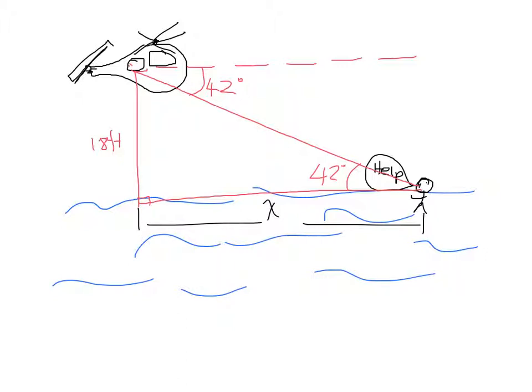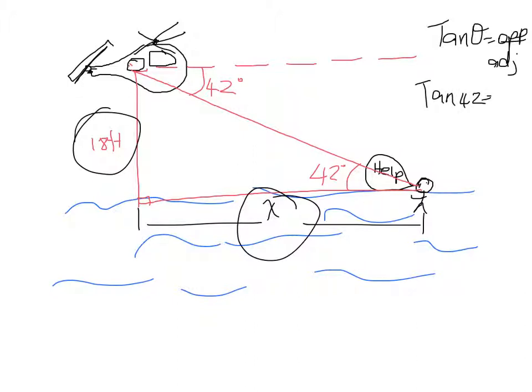So what do we do at this point? Well, we have here our opposite. That is opposite the 42 degrees, and we're looking for something that is adjacent to the 42 degrees. So we have to use toa. In our sohcahtoa, we have to use tan. So tan of the angle equals opposite over adjacent. And so tan of 42 equals opposite, which is 18, over x.